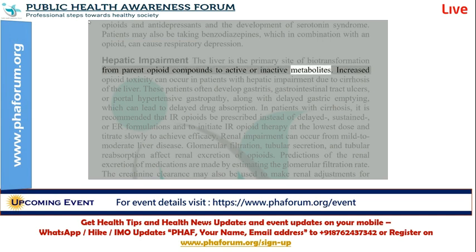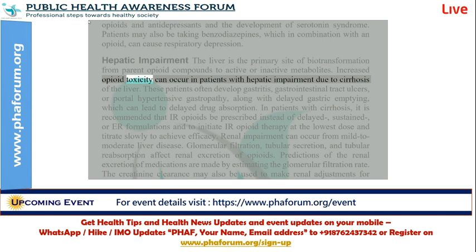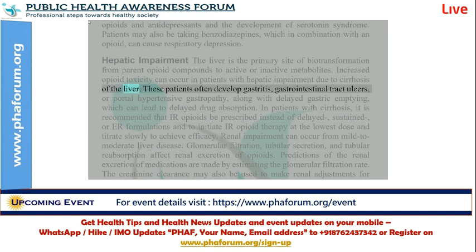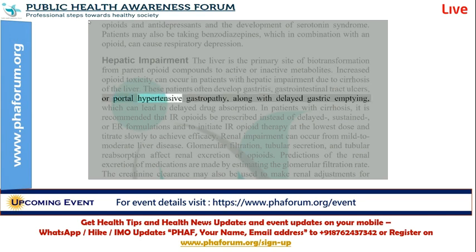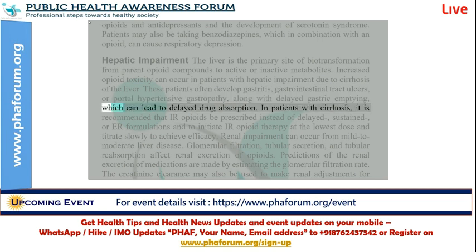Hepatic impairment: the liver is the primary site of biotransformation from parent opioid compounds to active or inactive metabolites. Increased opioid toxicity can occur in patients with hepatic impairment due to cirrhosis of the liver. These patients often develop gastritis, gastrointestinal tract ulcers, or portal hypertensive gastropathy, along with delayed gastric emptying, which can lead to delayed drug absorption.